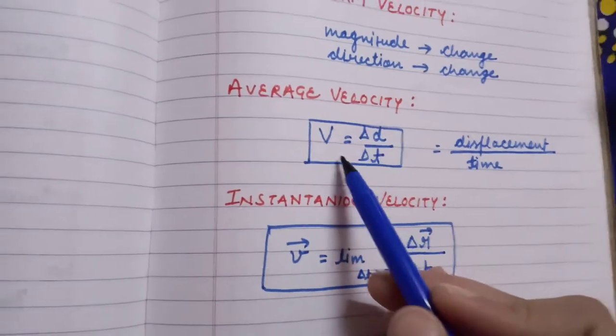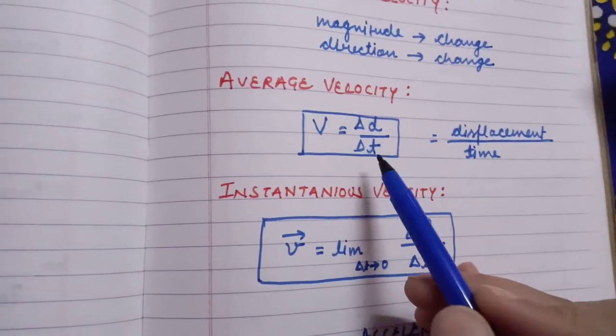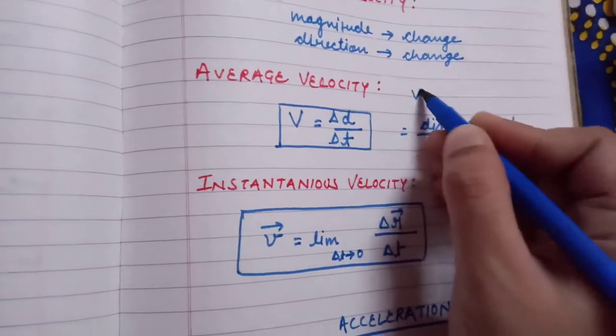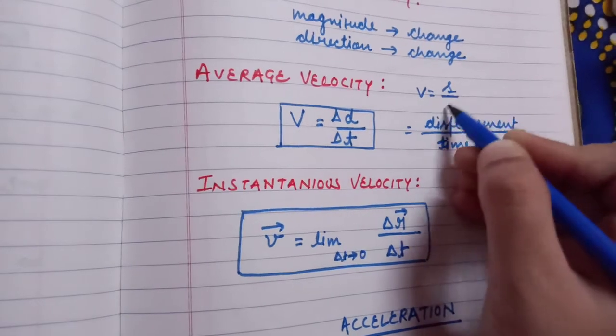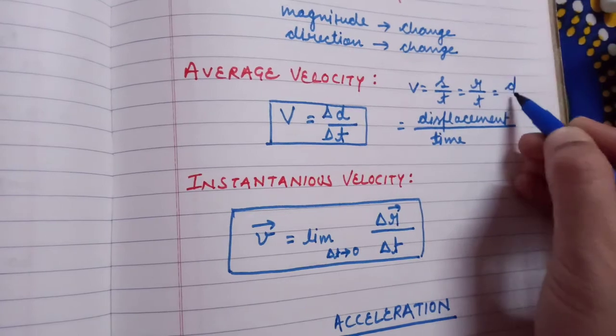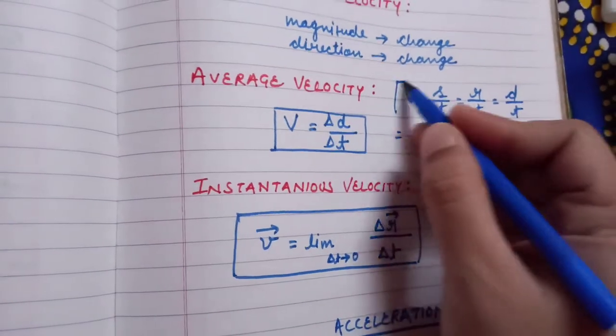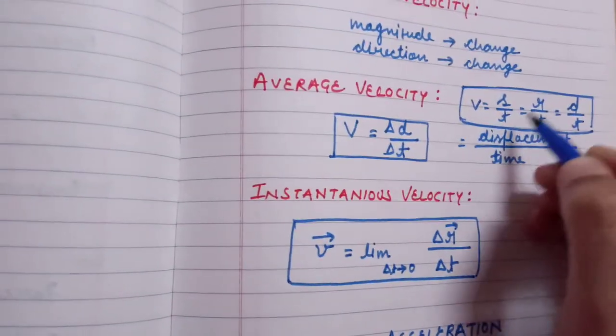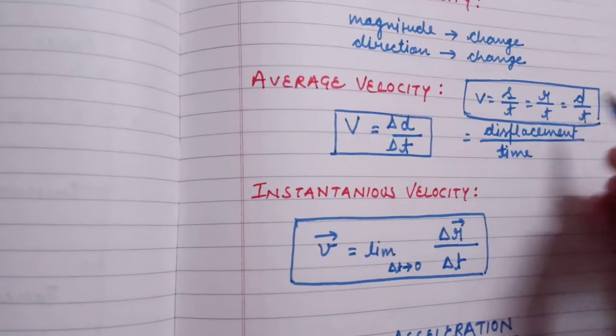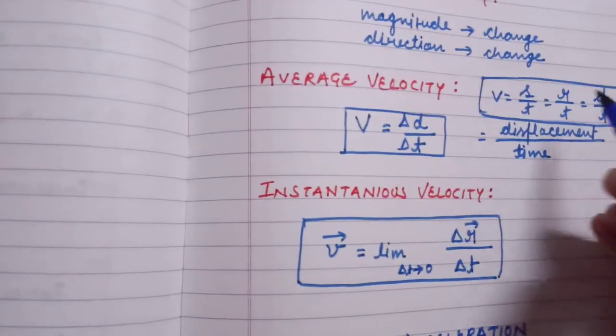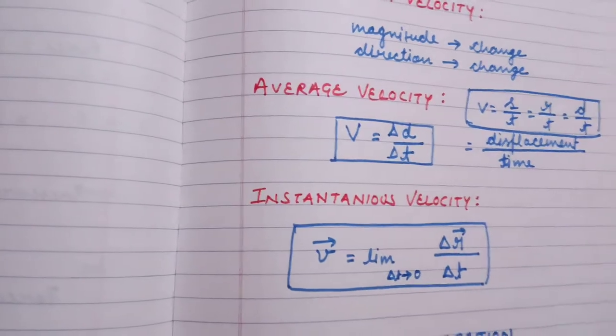For velocity, the important formula is v equals delta d upon delta t. Or we can say v equals s upon t, v equals r upon t, v equals d by t. These are all displacement upon time, so don't be confused by s, r, or d. These three are all for displacement.